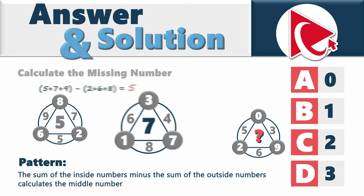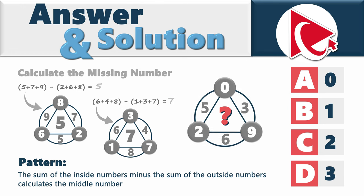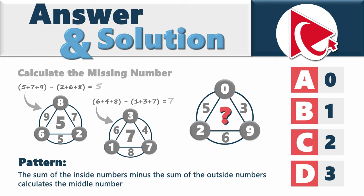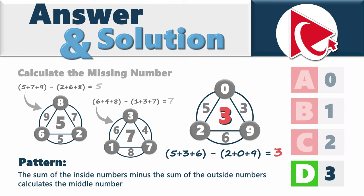Let's confirm our calculations by looking at the second shape: 6 plus 4 plus 8 minus 1 plus 3 plus 7 equals 7. Now we can calculate the missing number: 5 plus 3 plus 6 minus 2 plus 0 plus 9 equals 3. So the correct answer here is Choice D, 3.